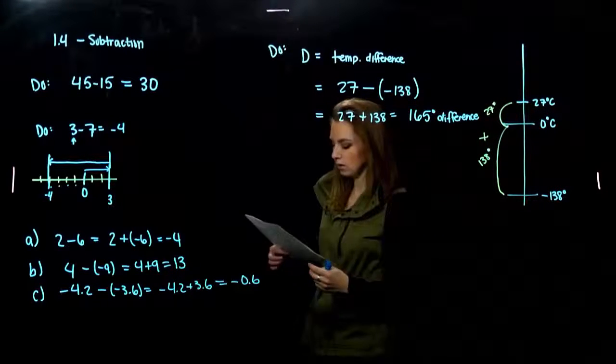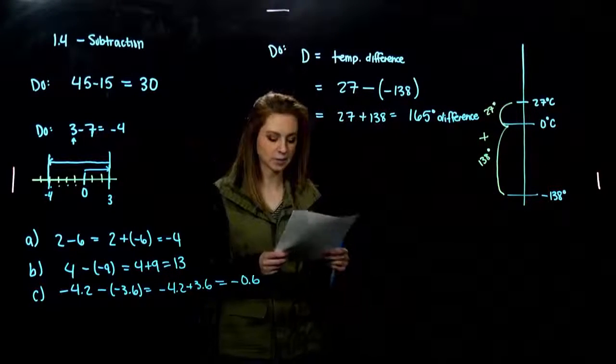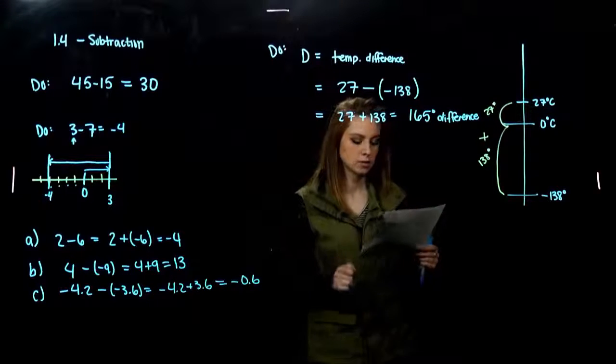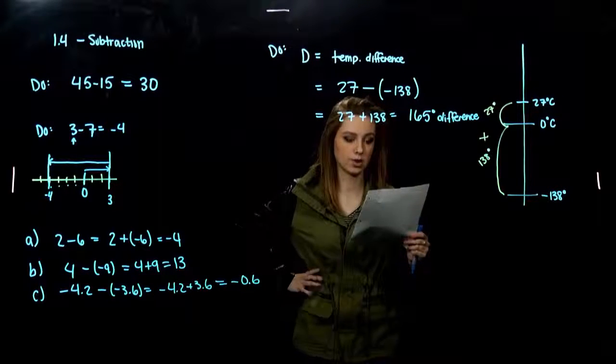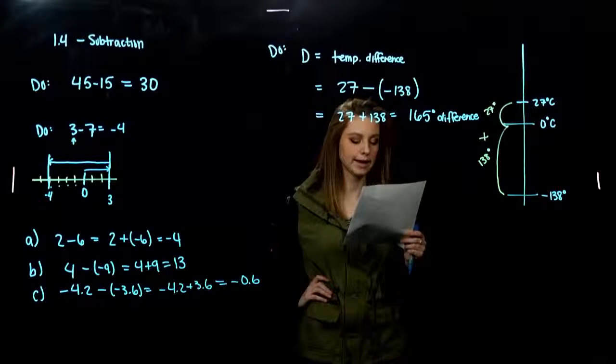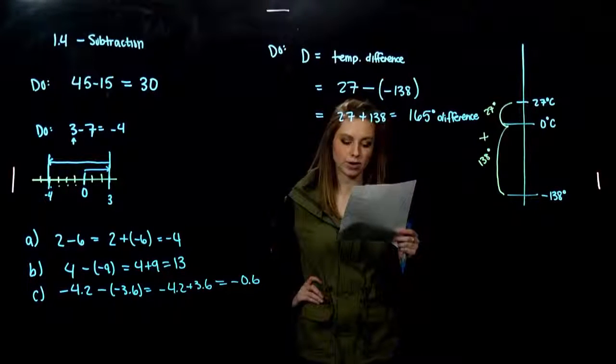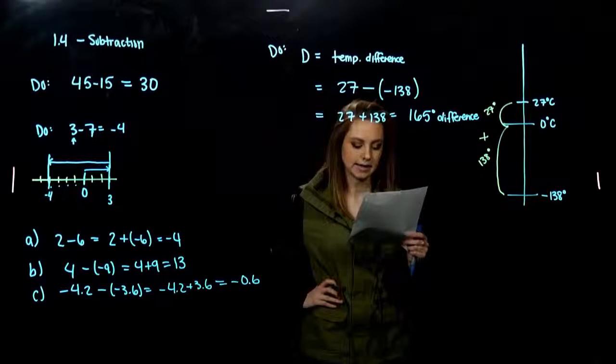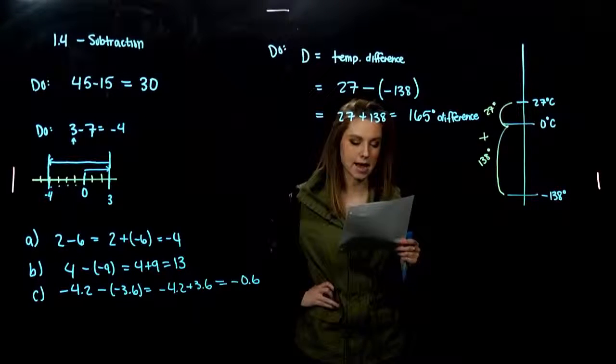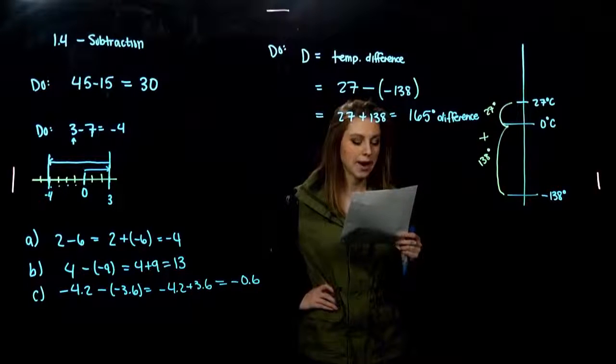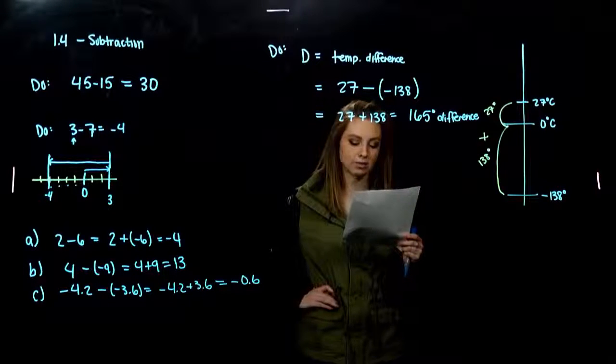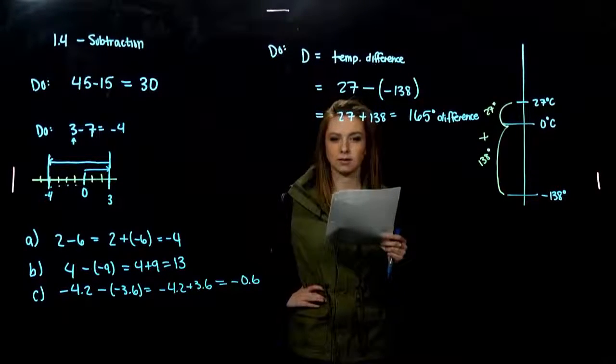Another problem for you. Highest temperature ever recorded in the U.S. was 134 degrees Fahrenheit in California in July 1913. The lowest ever recorded was in January 1971 in Alaska at negative 80 degrees Fahrenheit. How much higher was the temperature in California than Alaska?